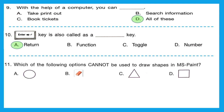Question 11: which of the following options cannot be used to draw shapes in MS Paint? When we draw shapes, we may use circle, triangle, or square. But option B, that is the eraser, is used not to draw but to erase. So option B is the correct answer.